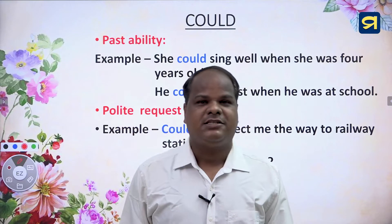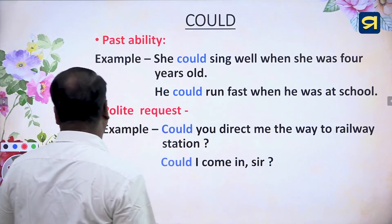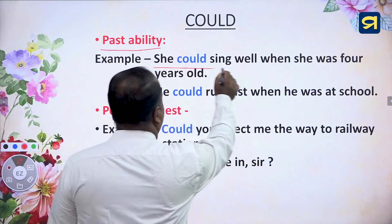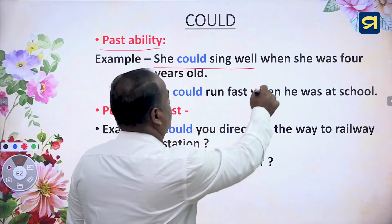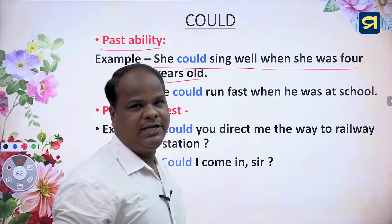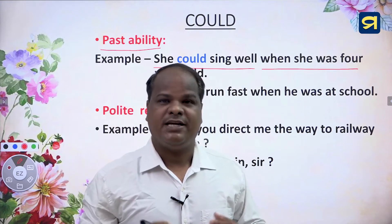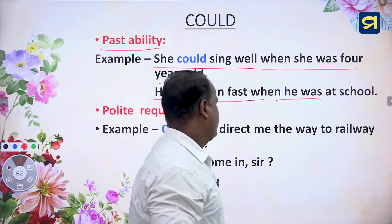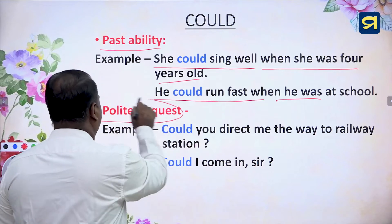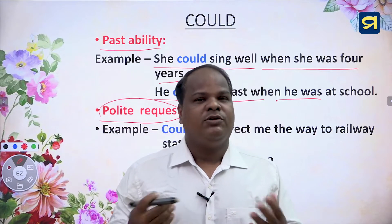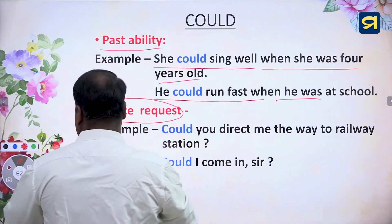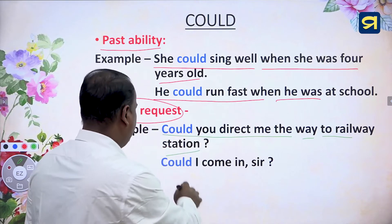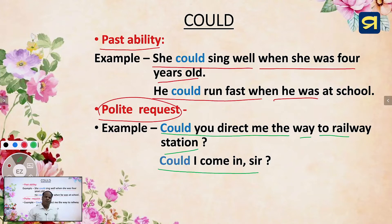'Could' is used for past ability. For example, 'She could sing well' when she was four years old refers to her past ability. Another example: 'He could run fast when he was at school.' Could is also used for polite requests — for example, 'Could you direct me the way?' or 'Could I come in, sir?'